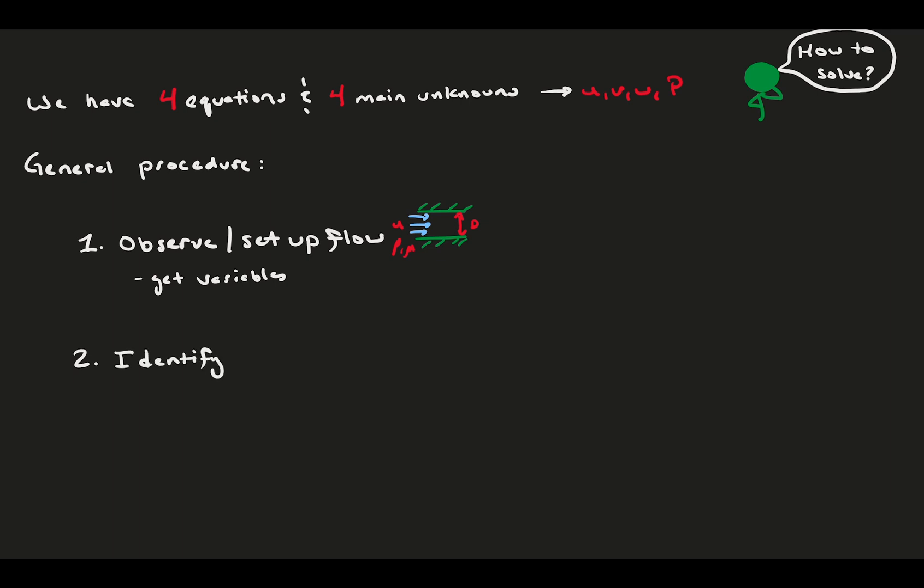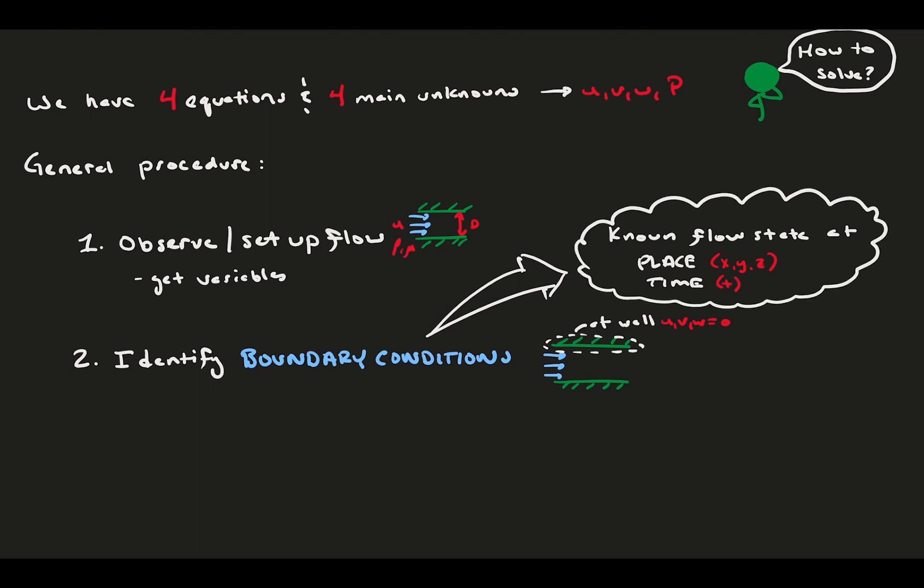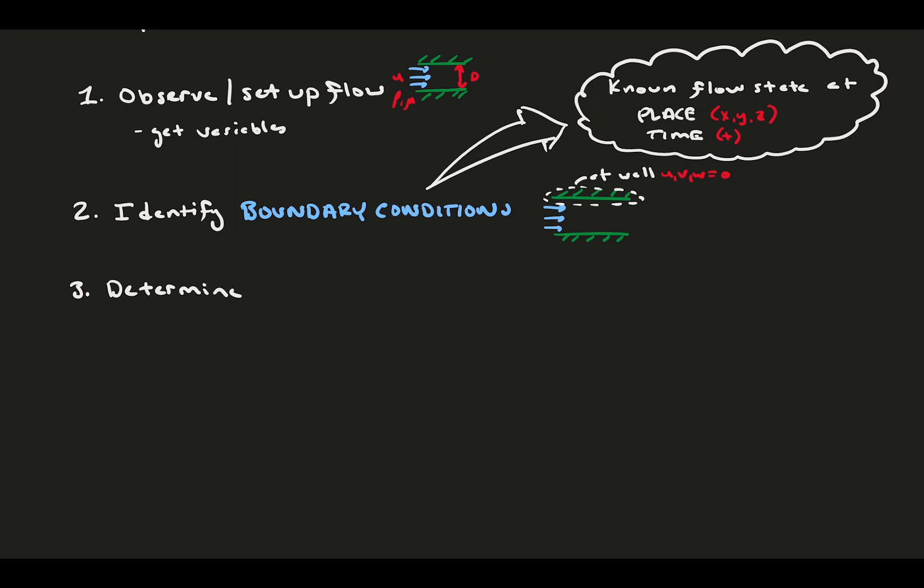Second, you need to identify your boundary conditions. They're called boundary conditions because a boundary condition is generally a known flow state at some place, xyz, or some time, t. A lot of times in solving the equations, we get unknown constants, and these boundary conditions help us find them. The third step is to determine your assumptions. Unless you're given them, like in most academic problems you would see in a class, you need to use your best judgment to determine fair assumptions for your problem.